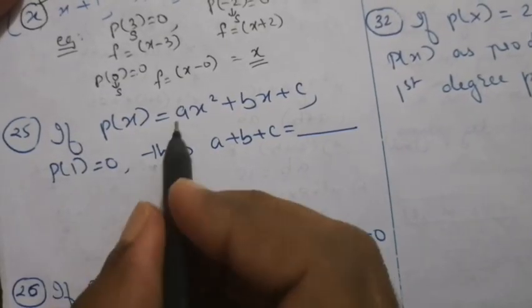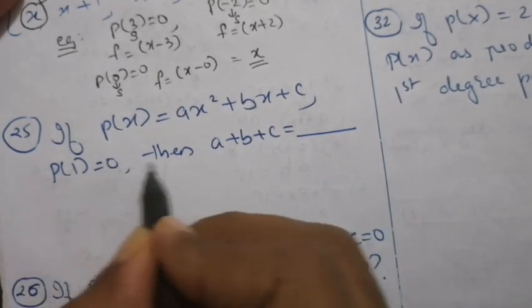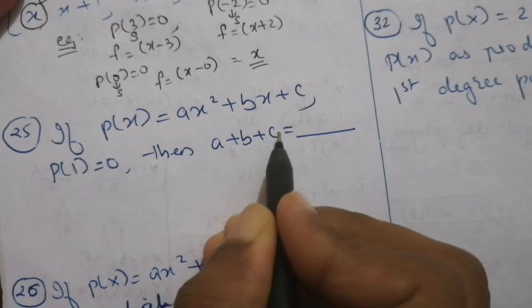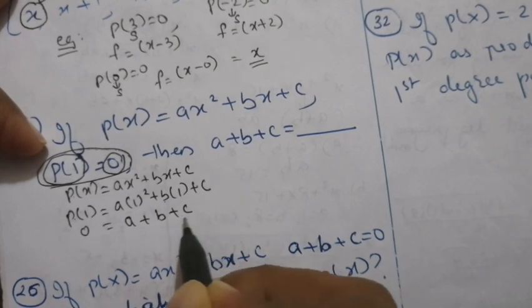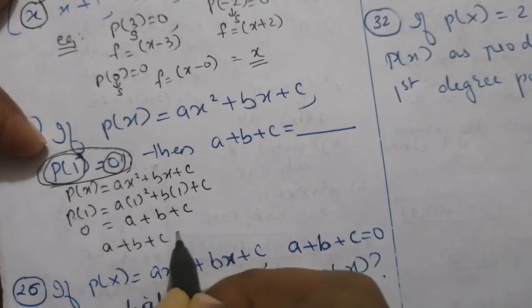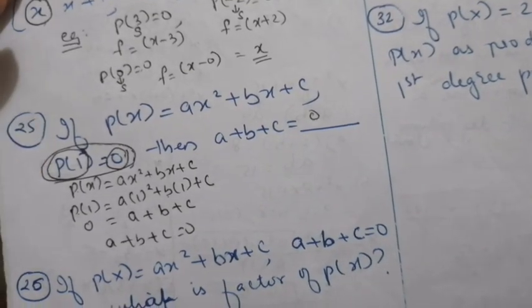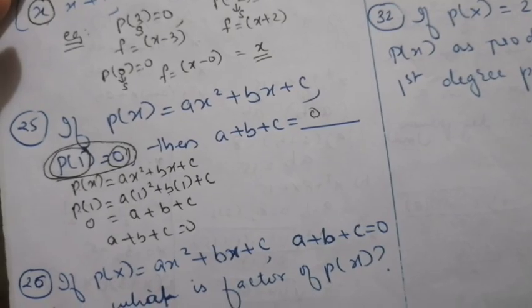Next question: p of x equals ax squared plus bx plus c, and p of 1 equals 0. What is a plus b plus c? Substituting x equals 1: p of 1 equals a times 1 squared plus b times 1 plus c equals a plus b plus c. Since p of 1 equals 0, therefore a plus b plus c equals 0.